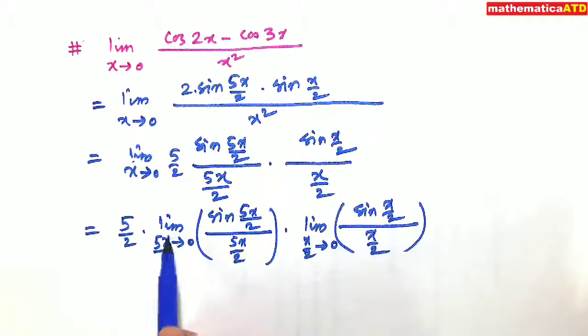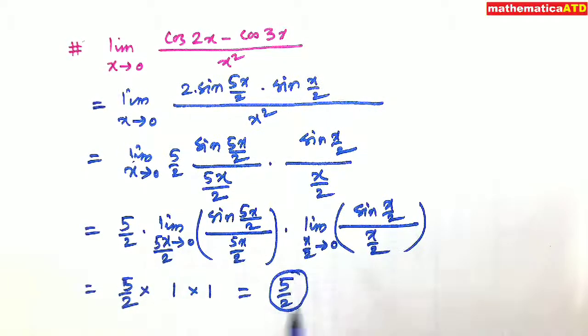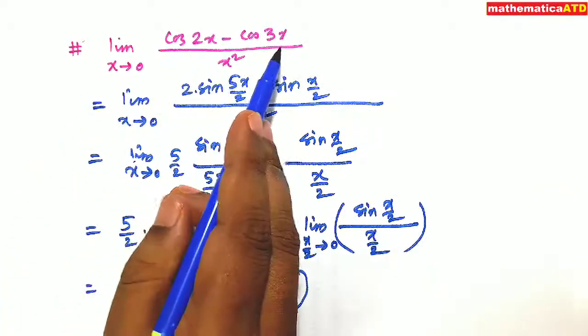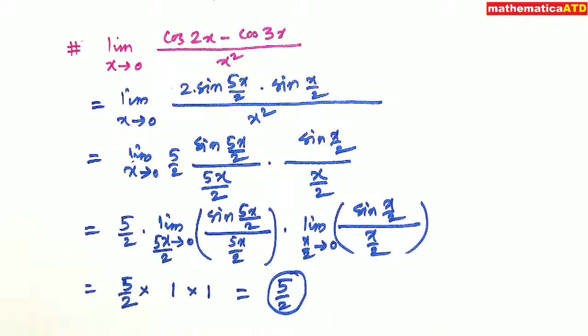So you know this formula. Limit theta tends to 0, sin theta upon theta is equal to 1. So obviously we'll get 5 by 2 into 1 into 1. So the result is only 5 by 2. So limit x tends to 0, cos 2x minus cos 3x upon x square is equal to 5 by 2. It has taken 4 minutes. But if you know my trick, only in 5 seconds you will find the result.